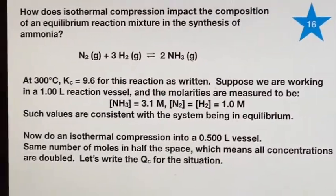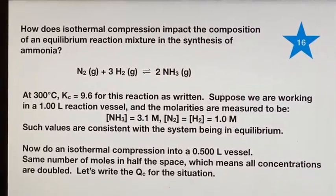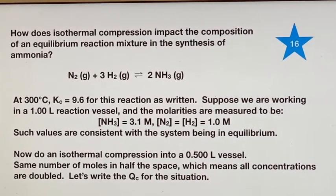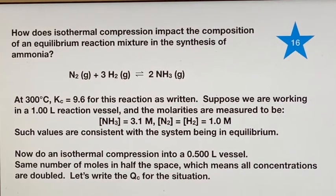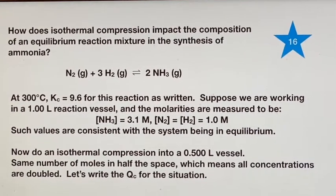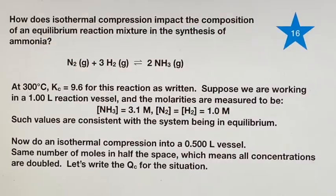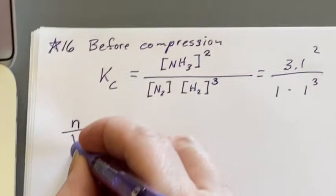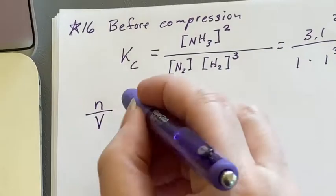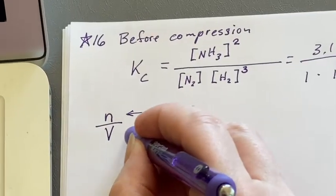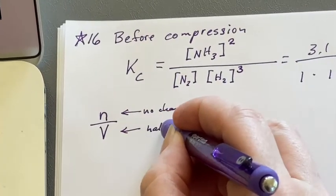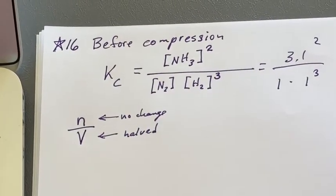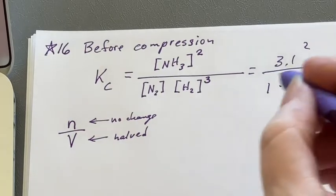Now we're going to do an isothermal compression. That means Kc is not going to change because we're not changing the temperature, but we have just made it so there's the same number of moles in half the space. V changed. This did not change, but this has been halved, which means since it's in the denominator, everything doubled.